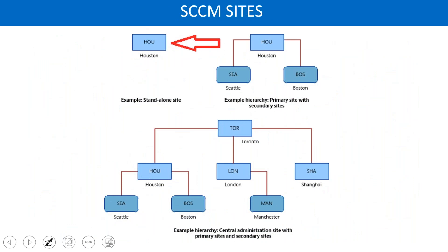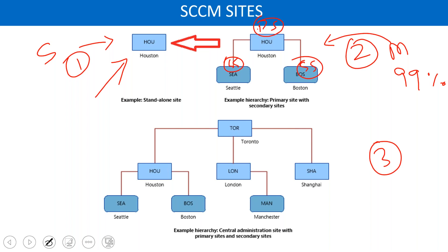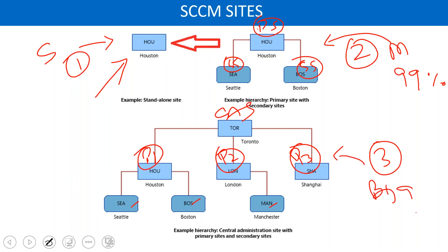These are the three architectural diagrams. For a small-size company, we put only one primary site. The second one is for a medium-size company — this is the most common architecture, 99% of the time, wherein you have one primary site on top and secondary sites in the branch offices. Then there is a third architecture that is very rare, used in big-size companies like Accenture, Deloitte, IBM. This will have a Central Administration Site on top, then multiple primary sites in multiple continents, and then secondary sites. This is for big-size organizations.